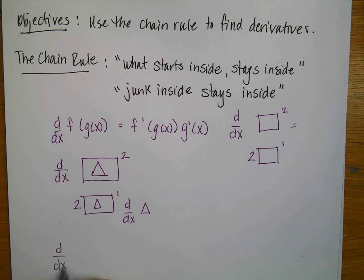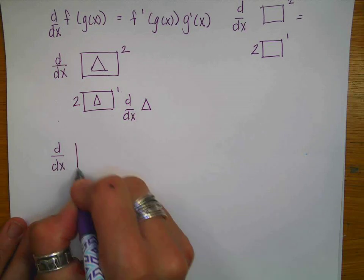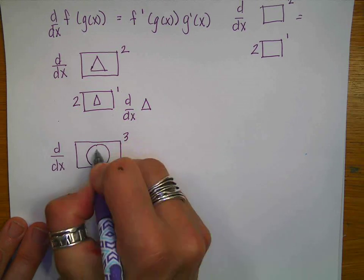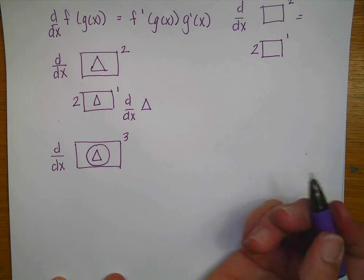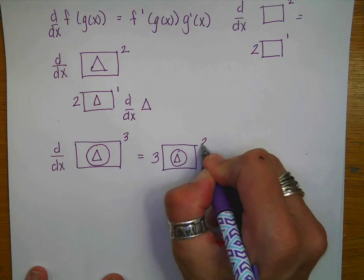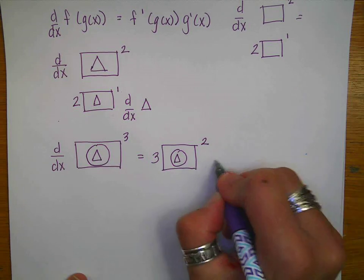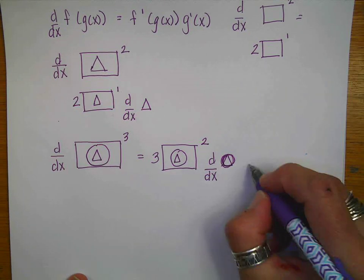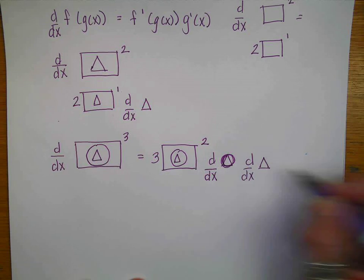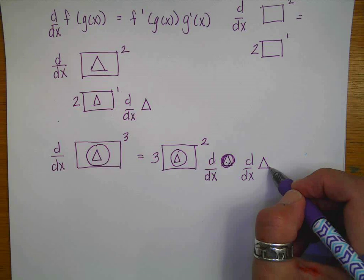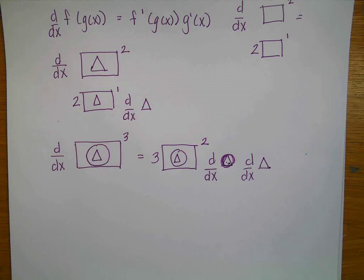Let's make it more complicated. The derivative of a box raised to the third power, where inside the box is a circle, and inside the circle is a triangle. The derivative would be 3 times the whole thing squared — that's the power rule — then I take the derivative of what's inside, which is the circle. And then I take the derivative again of the triangle, because there were two things inside. What started inside the circle was the triangle, so it stayed inside, and then I have the derivative of the triangle.